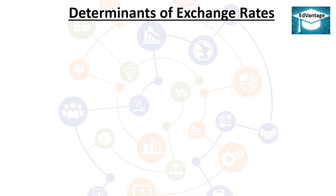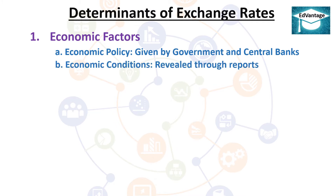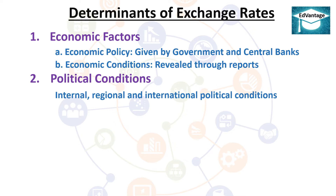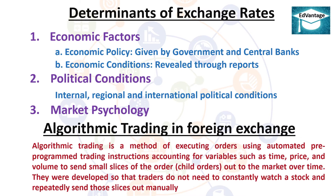Determinants of Exchange Rates: 1. Economic Factors — (a) Economic Policy given by government and central banks, (b) Economic Conditions revealed through reports. 2. Political Conditions — internal, regional, and international political conditions. 3. Market Psychology. Algorithmic Trading in Foreign Exchange: Algorithmic trading is a method of executing orders using automated pre-programmed trading instructions accounting for variables such as time, price, and volume to send small slices of the order (child orders) out to the market over time. They were developed so that traders do not need to constantly watch a stock and repeatedly send those slices out manually.